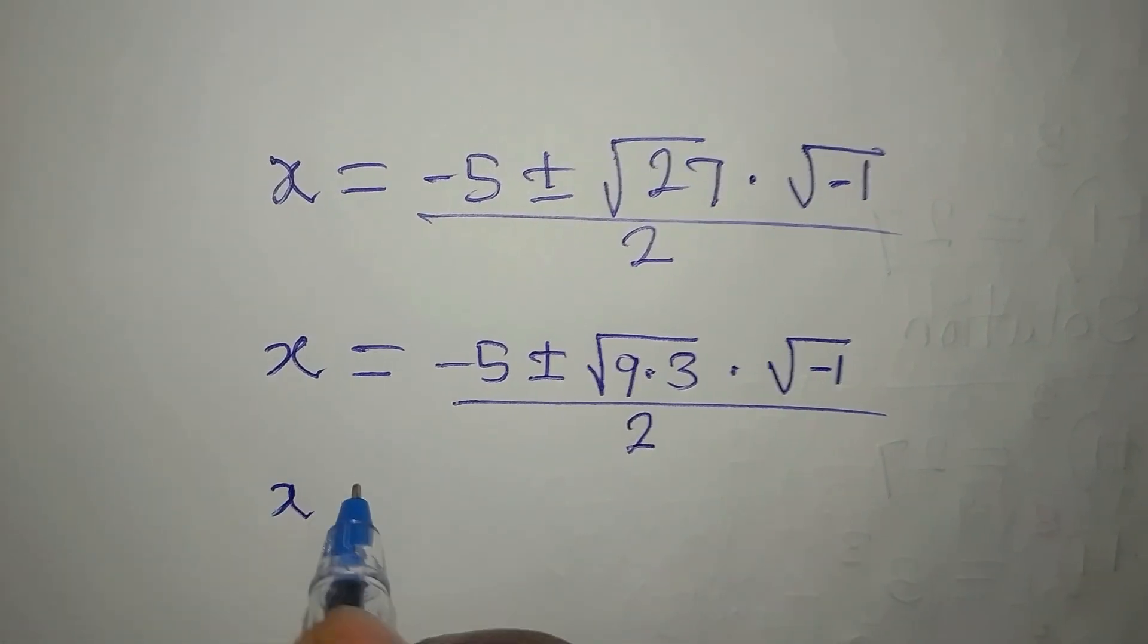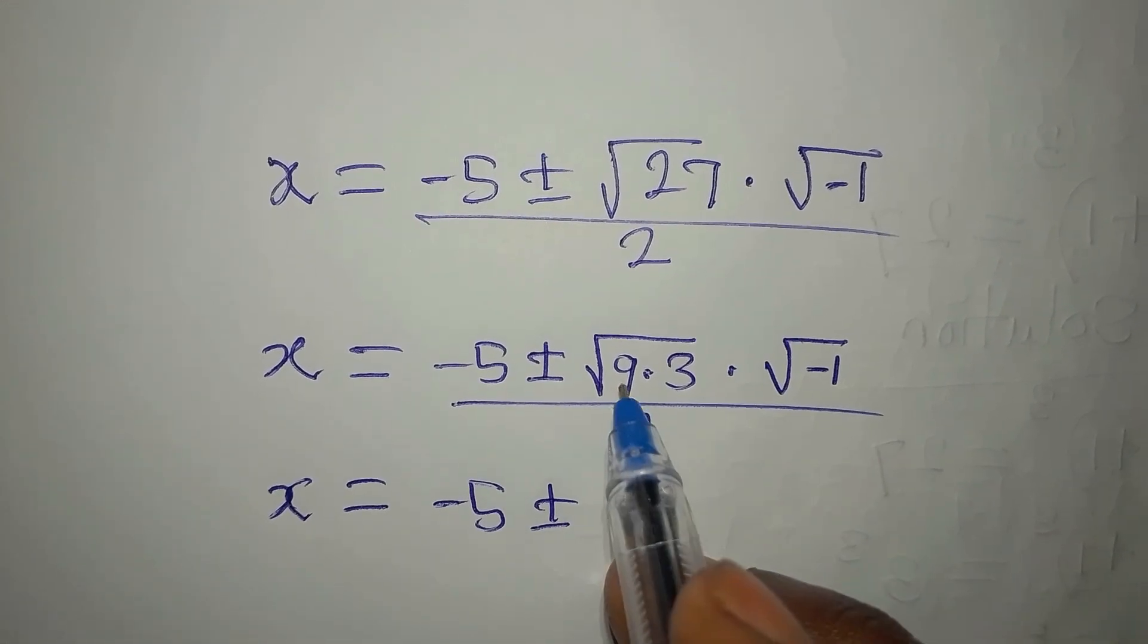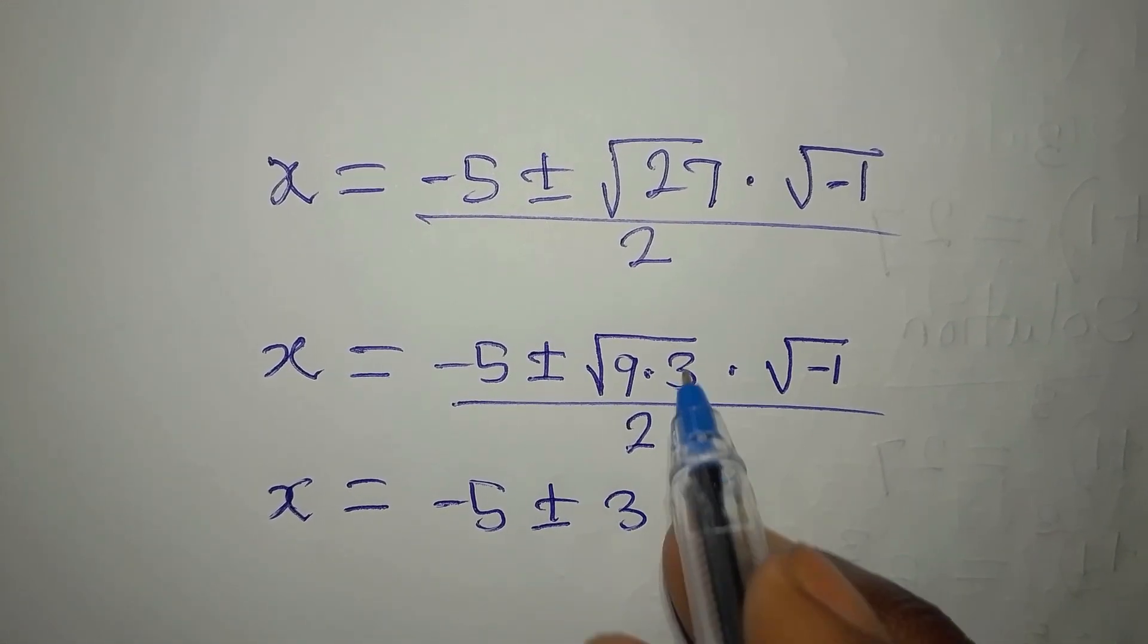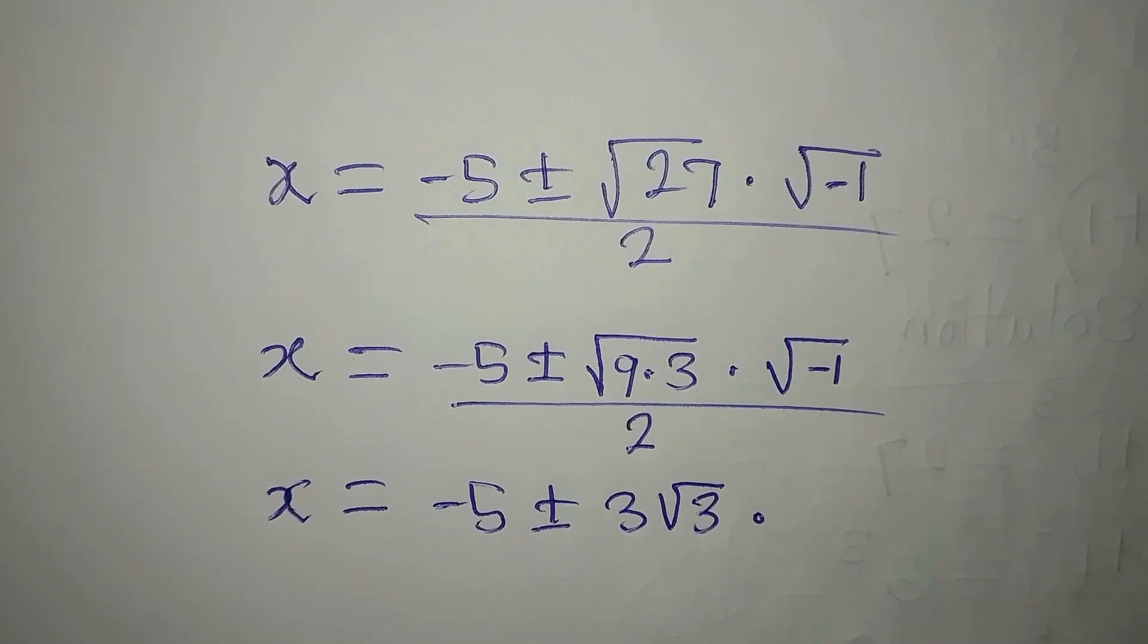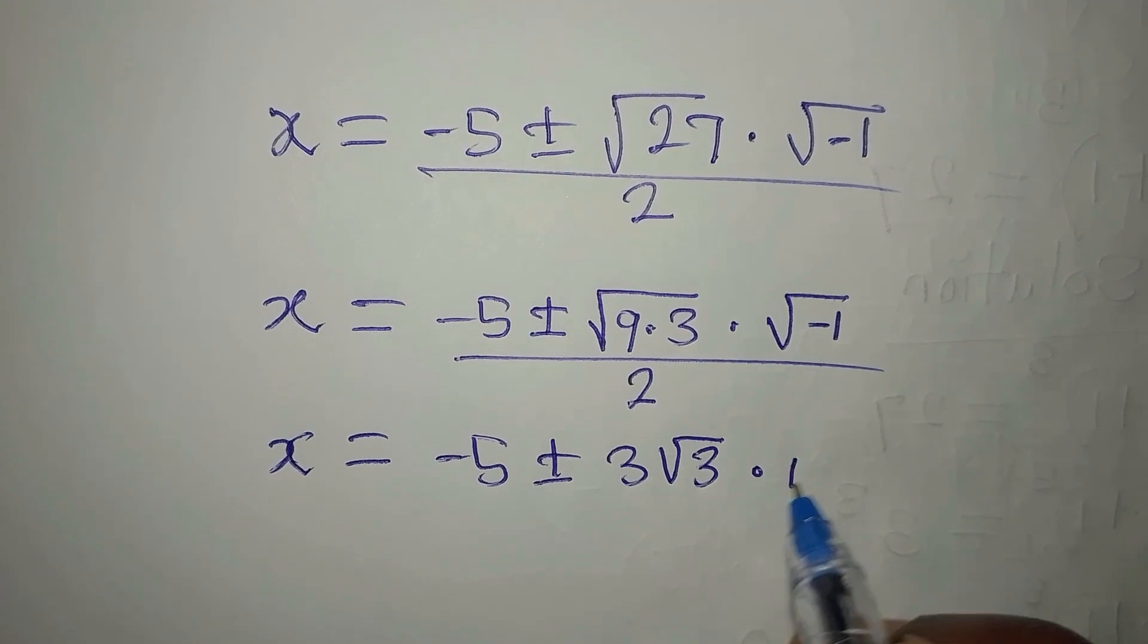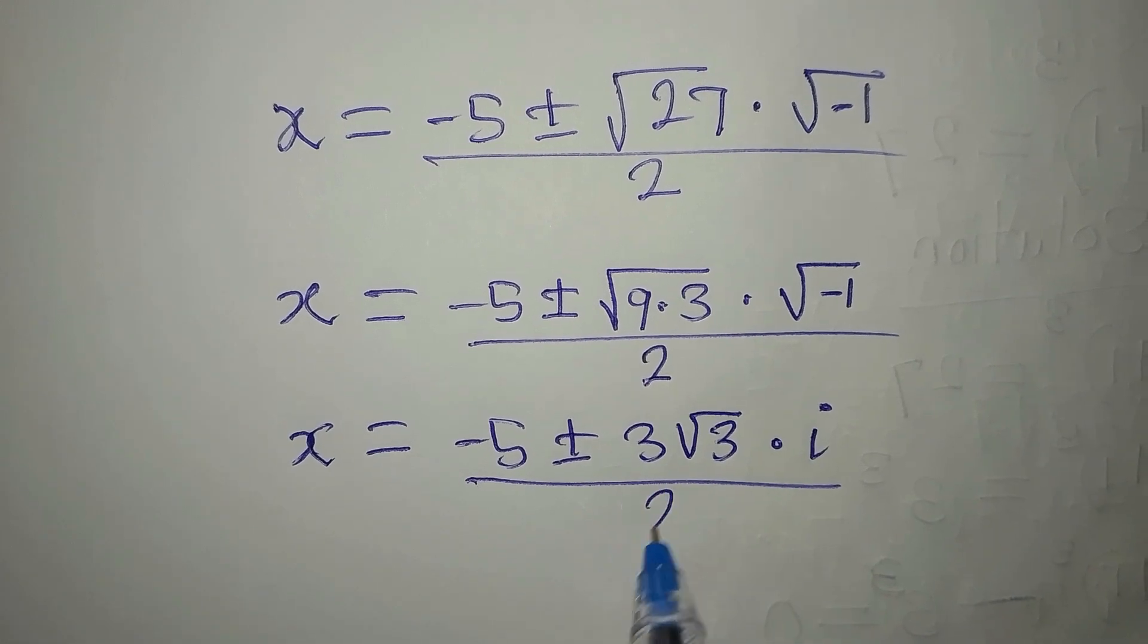X will now be equal to negative 5 plus or minus 3 times square root of 3 times square root of negative 1, which is imaginary and we write it as i, divided by 2.